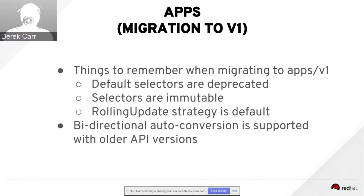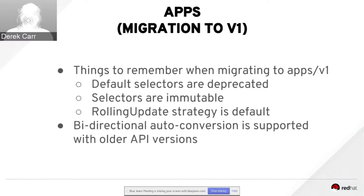For folks with a large existing investment in the platform, backwards compatibility is important. This was approximately a 16-month effort. If you are just starting to use these workload APIs in a Kubernetes 1.9-plus timeframe, we heavily encourage people to start using the apps/v1 resource types. If you have existing resources you've authored, the platform will continue to support bidirectional auto-conversion with the older versions for an extended period of time.